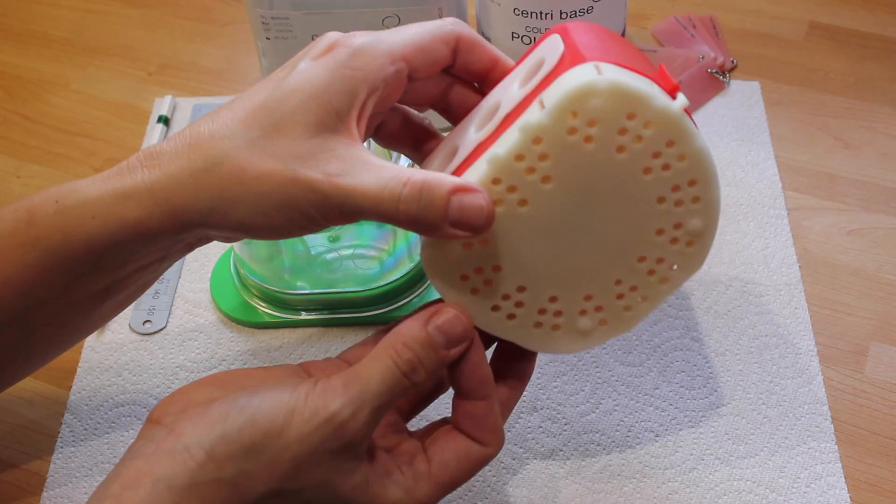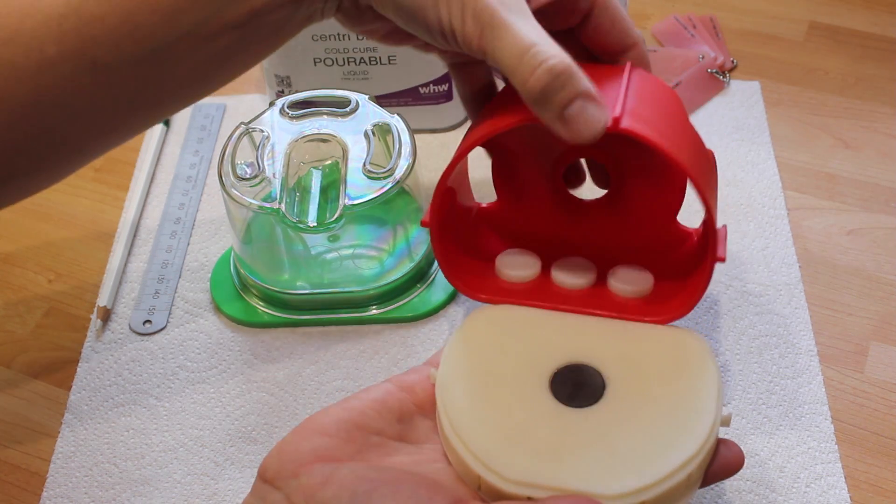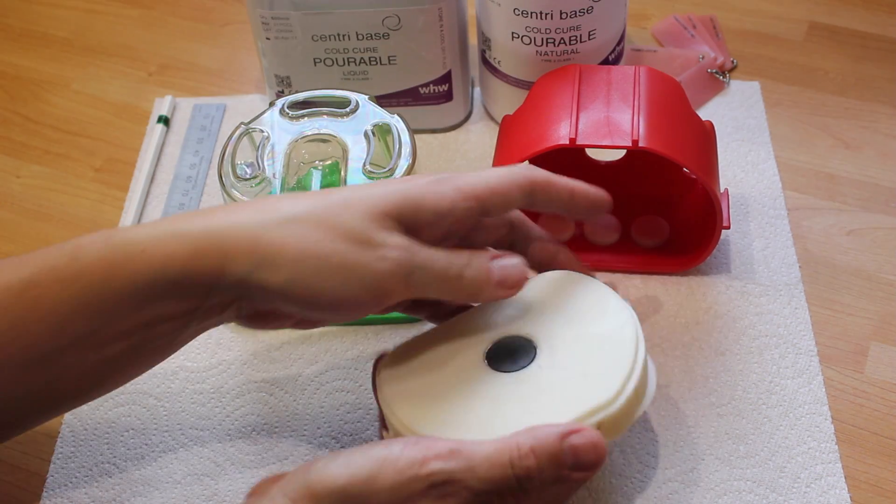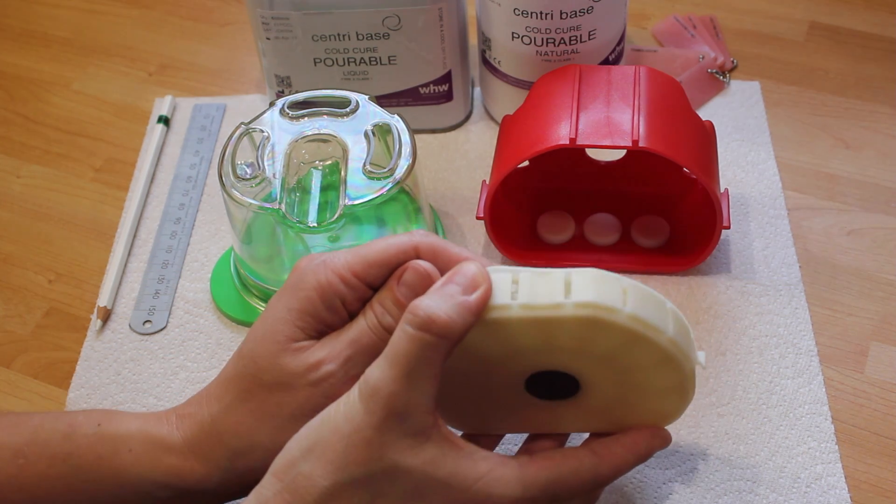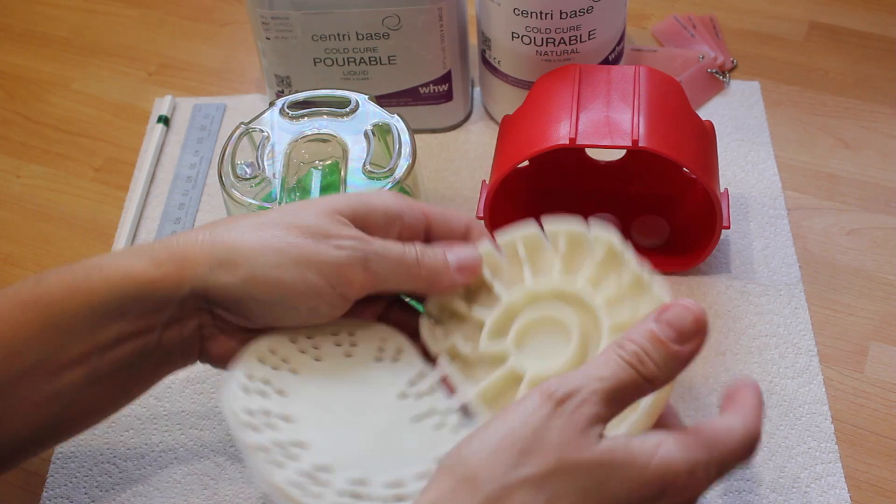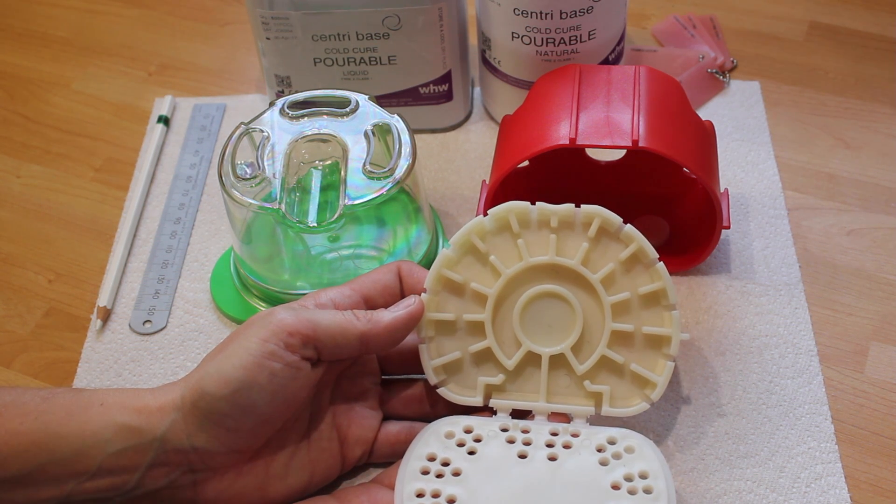Some have lugs on them where you can attach an elastic band for security. Some like this one have a magnet in the base compatible with articulator systems and some have channels for boiling out your teeth to prevent you mixing them up.